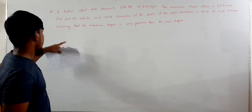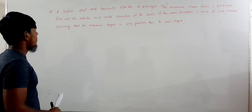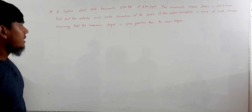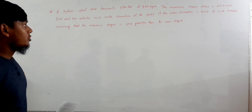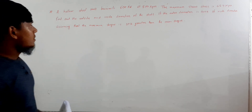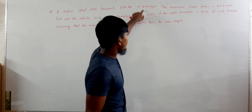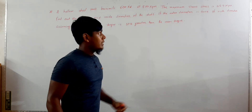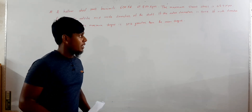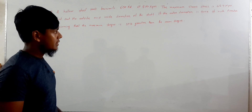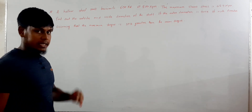A hollow steel shaft transmits 600 kW at 500 RPM. The maximum shear stress is 62.4 MPa. Find out the outside and inside diameter.